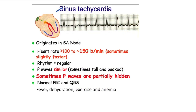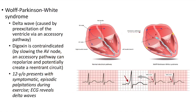Sinus tachycardia originates in the SA node. Heart rate is greater than 100, usually around 150 beats per minute; rhythm is regular. P waves are similar; sometimes they are tall and peaked or partially hidden. PR interval and QRS complex will be normal. Causes include fever, dehydration, exercise, and anemia.